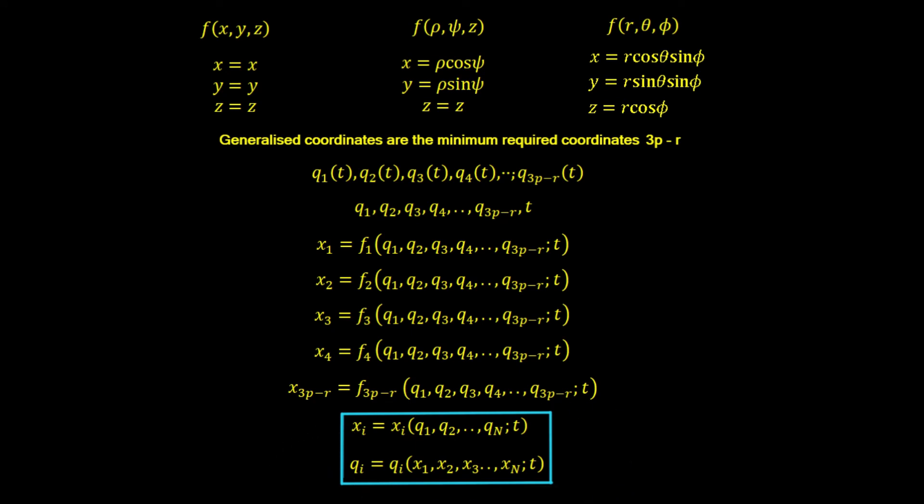You may think we can use these generalized coordinates for all equations, but that isn't generally true. For example, converting Newton's second law — force equals mass times acceleration — to cylindrical or spherical coordinates makes it far more complicated than f equals ma. However, when we look at the Euler-Lagrange equation, which is central to Hamiltonian and Lagrangian mechanics, we'll see that this equation allows us to use the generalized coordinates.